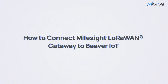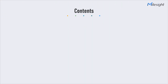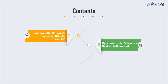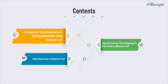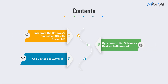Hello everyone, welcome to this tutorial video. Today we will take a step-by-step look at how to connect Milesight LoRaWAN gateway to Beaver IoT. We'll use the UG65 for this demonstration, and it will be divided into three parts: integrate the gateway's embedded network server with Milesight Beaver IoT platform, synchronize the gateway's devices to Beaver IoT, and add devices in Beaver IoT.